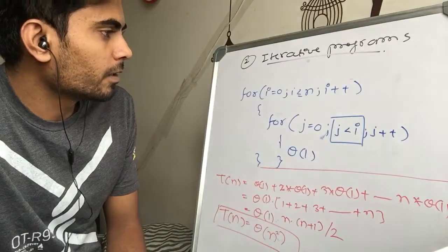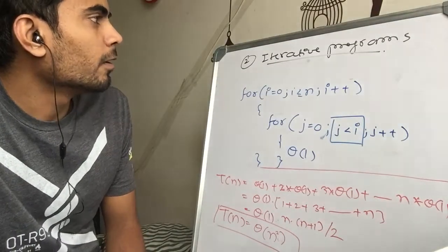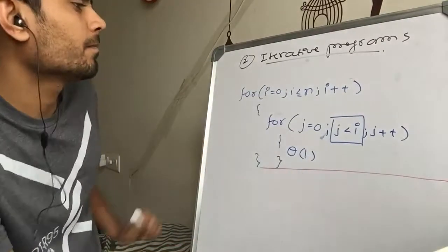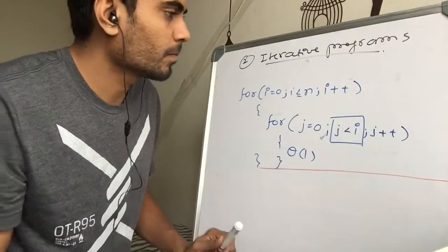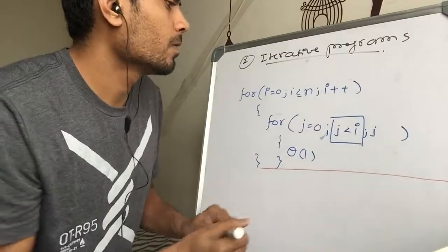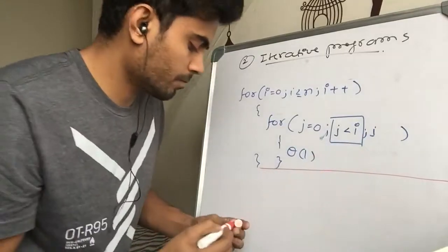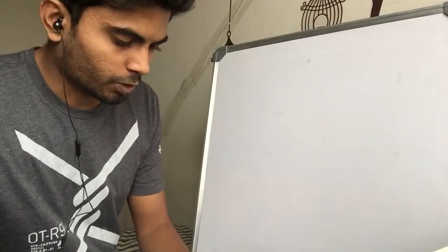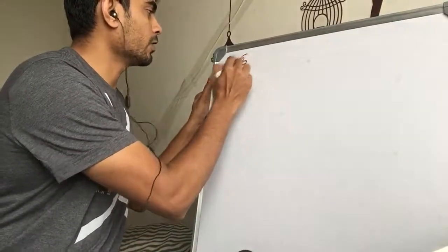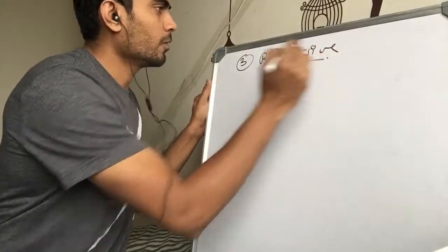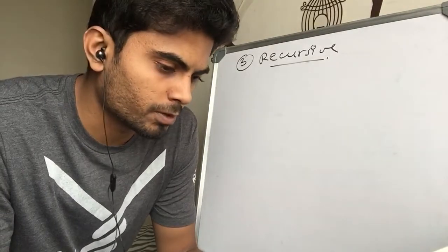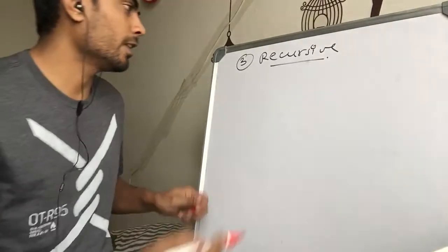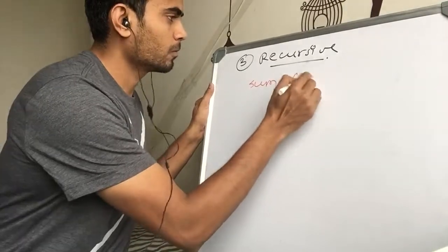We have now studied more complicated iterative constructs. Let me briefly introduce the third structure, which is recursive. We will look at how to solve complexity problems that involve recursive programming constructs — for example, finding the summation of n natural numbers.